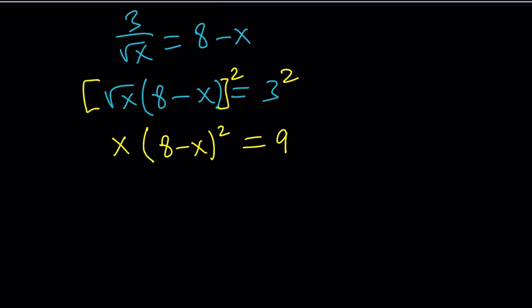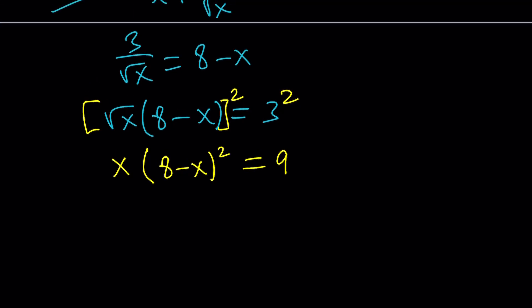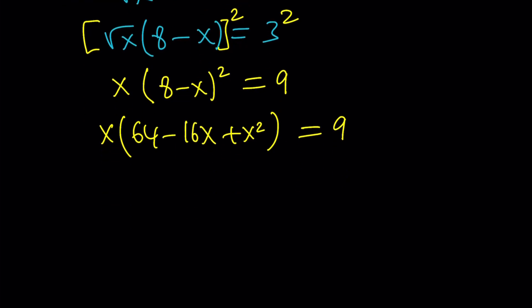Squaring both sides without distributing definitely makes sense. This is going to be x, and this is going to be 8 minus x squared, and the result will be 9. And then from here, we're going to get something like this. Let's expand this: 64 minus 16x plus x squared, and then it's equal to 9.